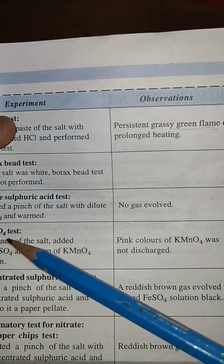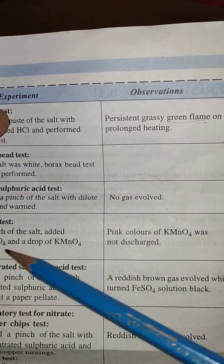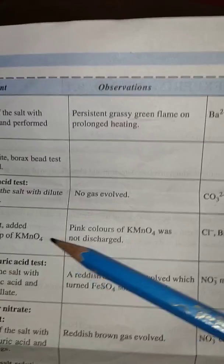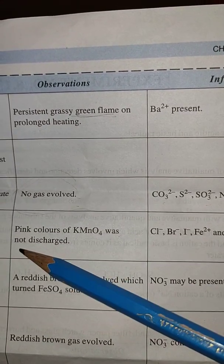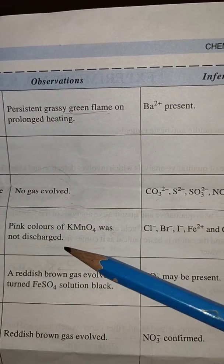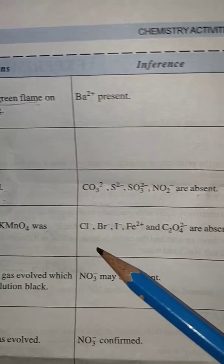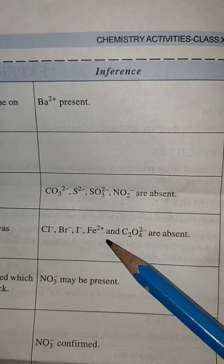Come to the KMnO4 test: take a pinch of the salt, add dilute H2SO4 and a drop of KMnO4 solution. Pink color of KMnO4 was not discharged, so Cl⁻, Br⁻, I⁻, Fe²⁺, and C2O4²⁻ are absent.